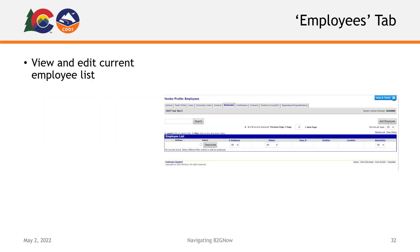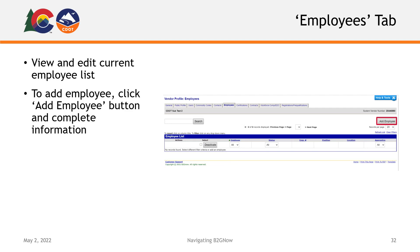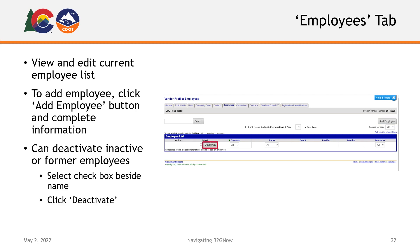The next tab is your Employee tab, where you can view and edit your current employee list. To add an employee, click the Add Employee button on the upper right of the screen and complete the requested information. You can also deactivate inactive or former employees by selecting the checkbox beside their name and clicking the Deactivate button.